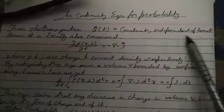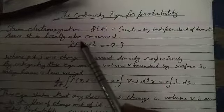From electromagnetism, Q(t) is equal to constant independent of time t. Hence, it is locally also conserved.